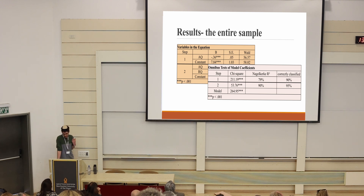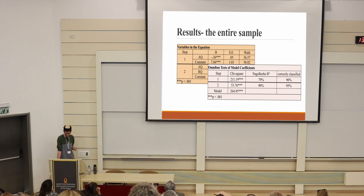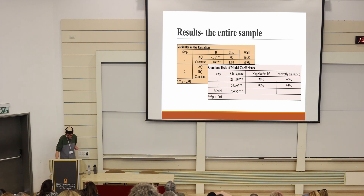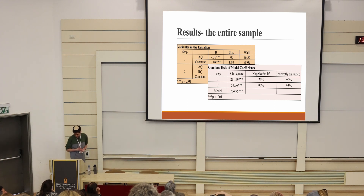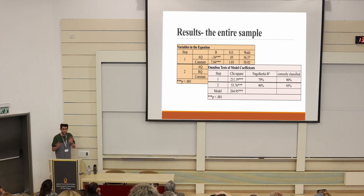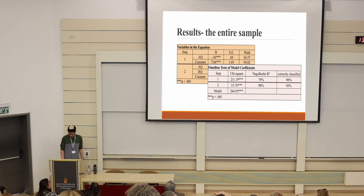Both the AQ and RQ are significant predictors of correctly classifying autistic and typically developing individuals. The correct classification rate of both screeners is very good — 95% of the sample can be classified using these two tools. That's for the entire sample.